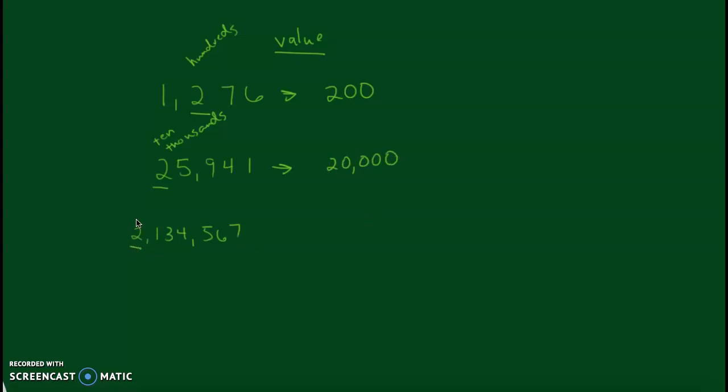And our last number, it's in the millions place. So, if we have two millions, what's the value of that? The value is 2,000,000.